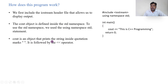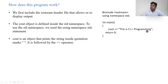Cout is an object that prints the string inside quotation marks, followed by the extraction operator. For example, if you write cout with the extraction operator and something in quotation marks, it will print that as a literal string. Here it will print 'this is the C++ program' as it is.